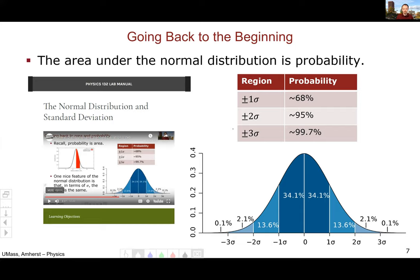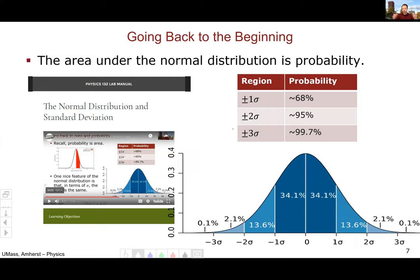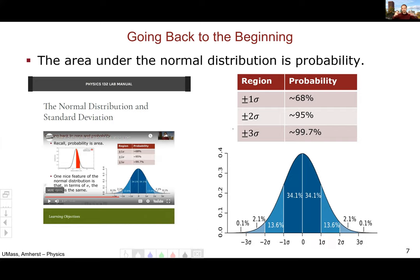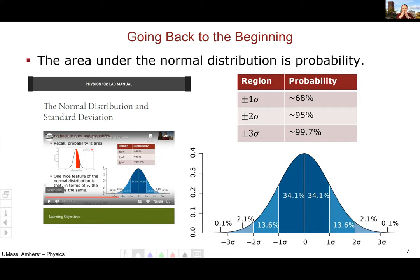This probability doesn't change with the width of the distribution. As the distribution gets wider it gets shorter; as it gets narrower it gets taller — these always balance out so that the area within a certain number of standard deviations is always the same.